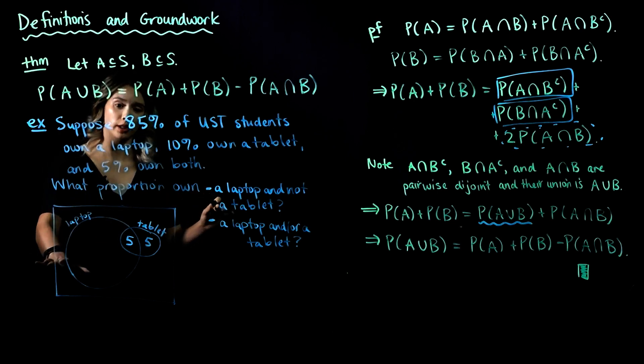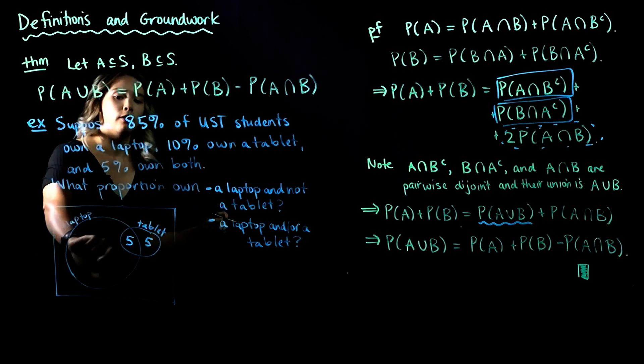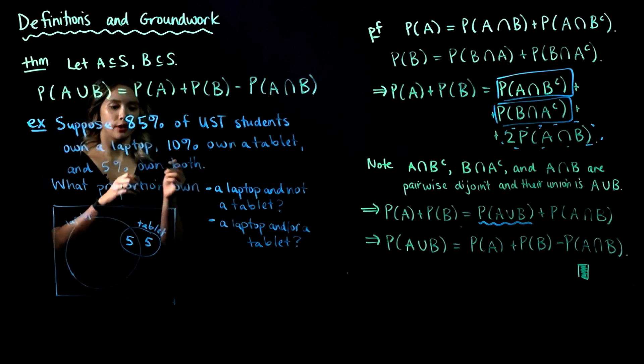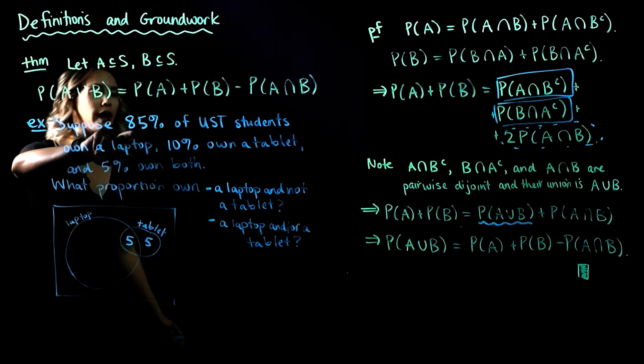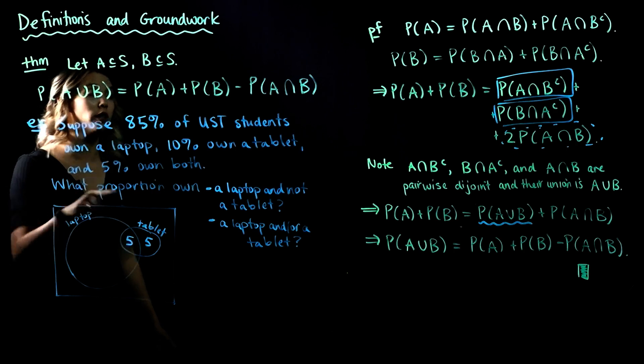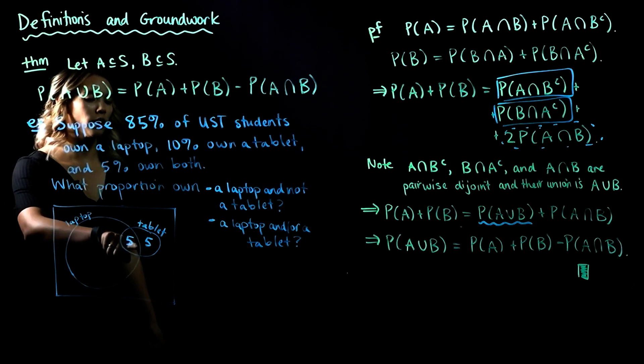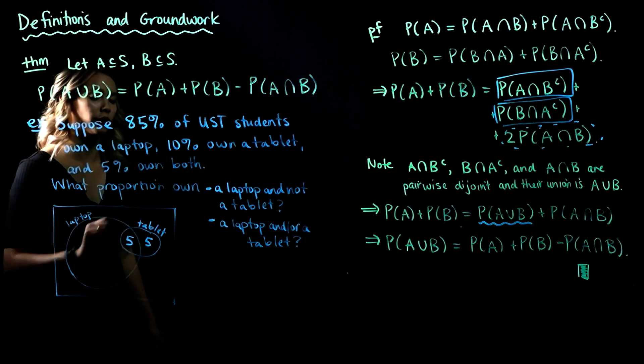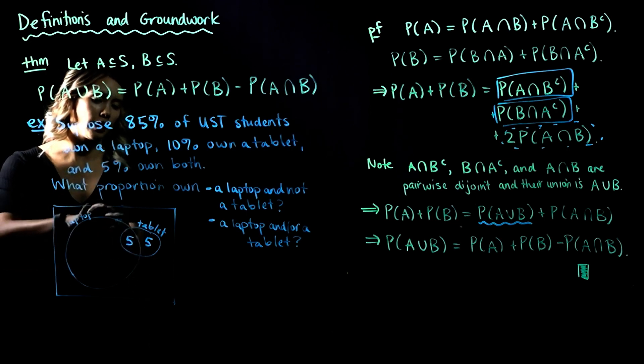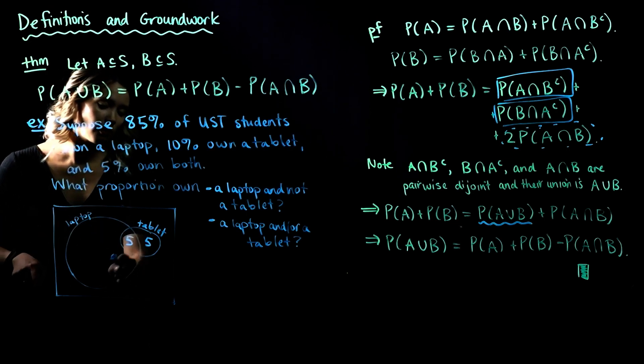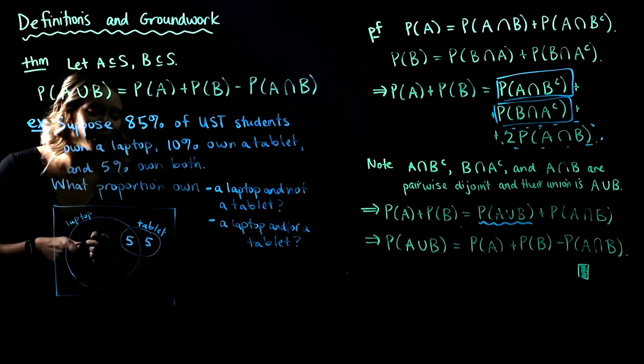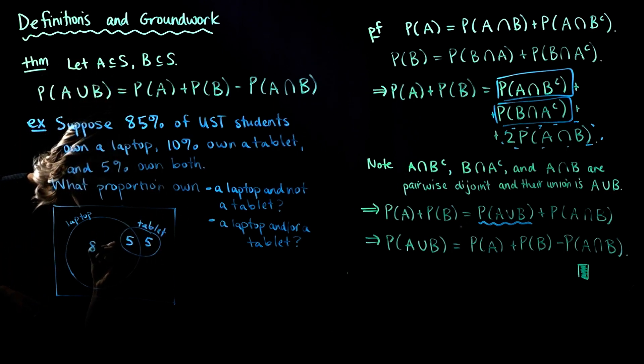All right, so our picture is starting to fill out now. Let's finish off that laptop circle. So 85% own a laptop, so this entire circle is 85, but we know that the part of the circle for laptop here is 5. So if we have something plus 5 equals 85, then that something has to be 80.